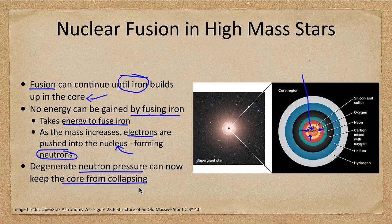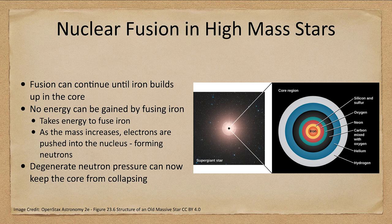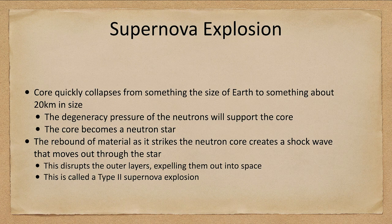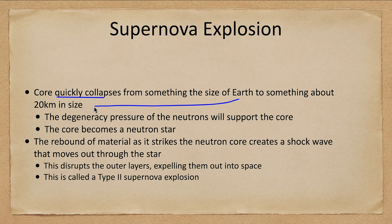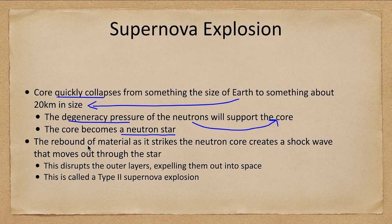This neutron degeneracy pressure provides support, but we've gotten rid of all the space between the atoms, so this object will be more the size of a city than the size of a planet like a white dwarf. The supernova explosion itself happens very fast — the core quickly collapses from something the size of Earth to something the size of a city, supported by neutron degeneracy pressure, and it becomes what we call a neutron star.